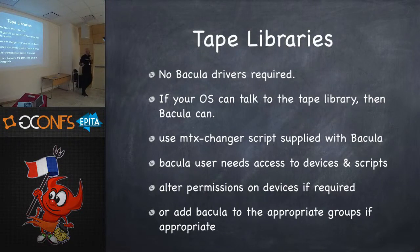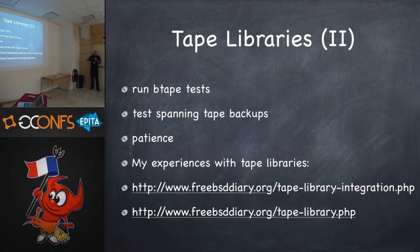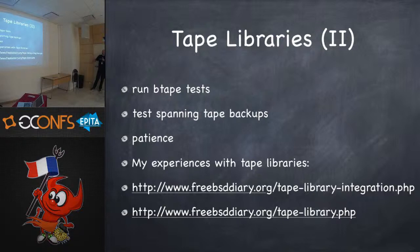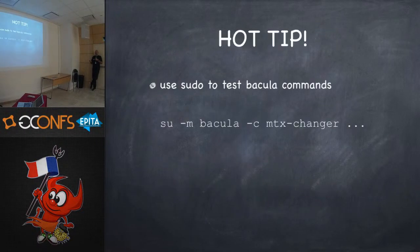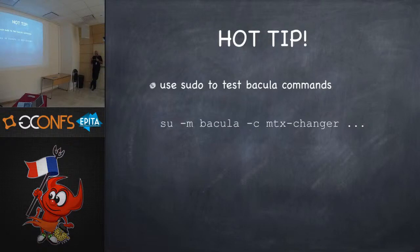Tape drivers: you don't need anything special — it just uses a SCSI file, generally a SCSI layer. There is an MTX changer that deals with MTX directly. Run your B-tape test, and especially run a backup that spans two tapes, because sometimes the tape driver doesn't like spanning tapes. Use sudo to test the Bacula commands and imitate what Bacula is actually going to do. The biggest problem people have with tape backups is they haven't tested the process as the Bacula user — they run it as root, which is a different user.